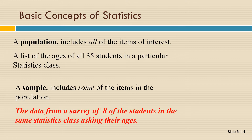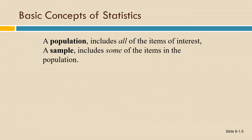By contrast, we might look at data from a survey of just eight of the students in the same statistics class, asking their ages. That would be a sample. So a population includes all the items of interest, whereas a sample includes some of the items in the population.